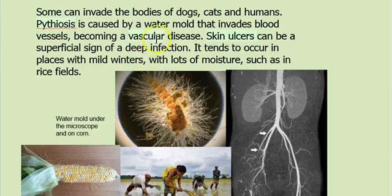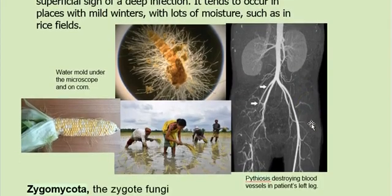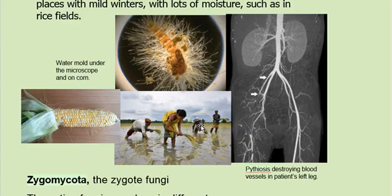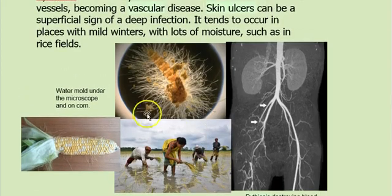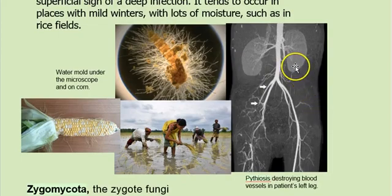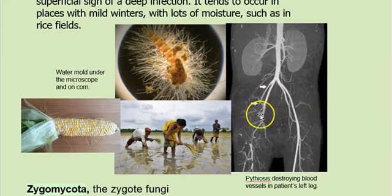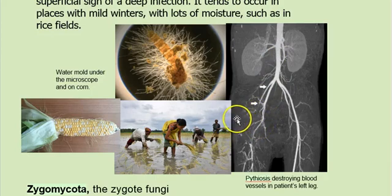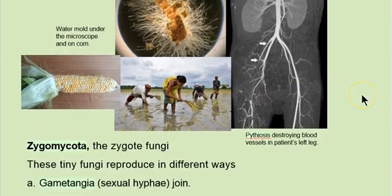Pythiosis is spreading — it used to be just dogs and cats, but humans are getting it more and more. It lives in warm, moist places with mild winters. I show rice fields here because we're seeing more of it throughout areas that have mild winters, including Cambodia, Vietnam, California, and other parts of the world. The surface ulcers may not look like much, but they can be a superficial to deep infection. This patient's common iliac and internal iliac has been destroyed — this person is going to lose their leg due to a fungus. Fungi can be pretty serious parasites.